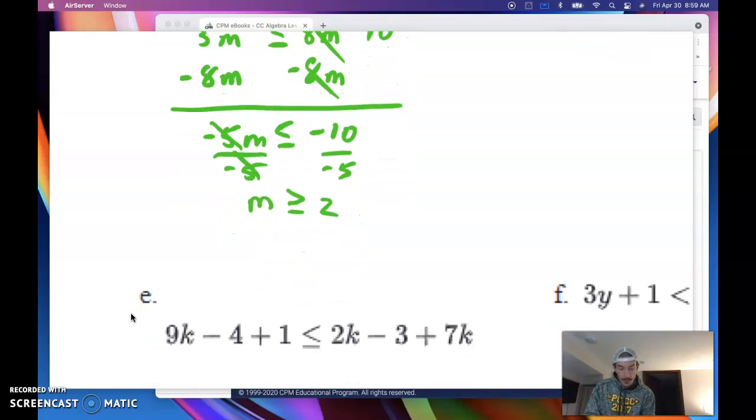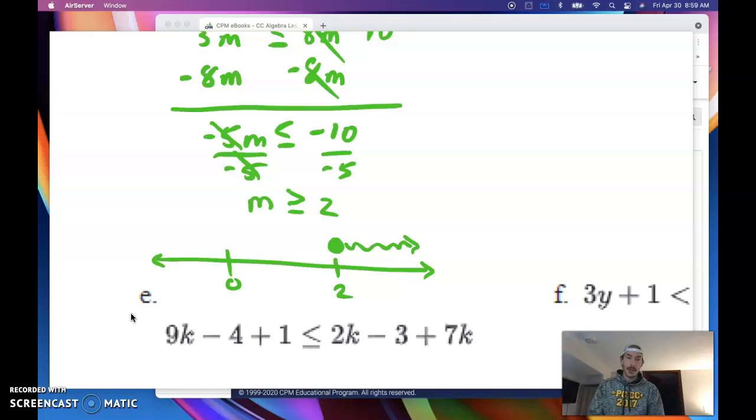These cancel. I get m is flip the sign greater than or equal to 2. So there's my boundary point. I draw that number line. I've got 0 in there for reference. I've got 2 in there where the boundary goes. I draw in the appropriate dot. In this case, it is a shaded dot. And then we want greater than or equal to.